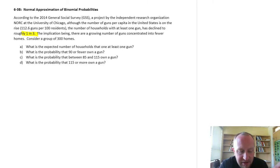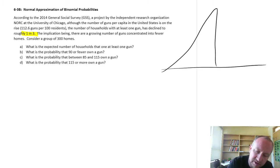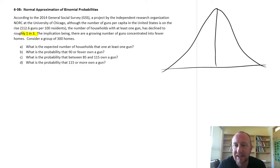So let's consider a group of 300 homes to answer these questions. We're using our continuous normal distribution. Can we use a normal distribution in this case to estimate these binomial probabilities?